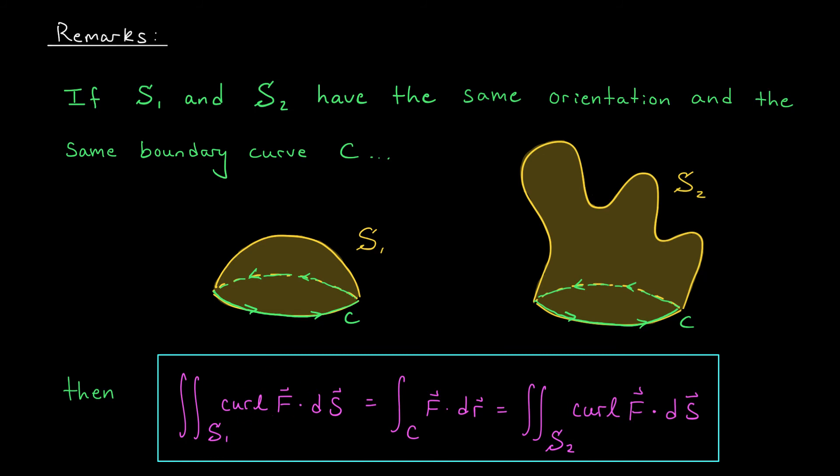the surface integral of the curl of F over S1 should be equal to this line integral. But also by Stokes' theorem, the surface integral of the curl of F over S2 should be equal to this same line integral. Therefore, it doesn't matter if we integrate the curl of F over S1 or S2. We're going to get the same result. If you think about it for a second, that's insane. It means that integrating the curl of F over this crazy surface S2 should give the same result as if we integrated the curl of F over this flat surface here, which is no doubt much easier to work with. We just have to make sure we use the same orientation.